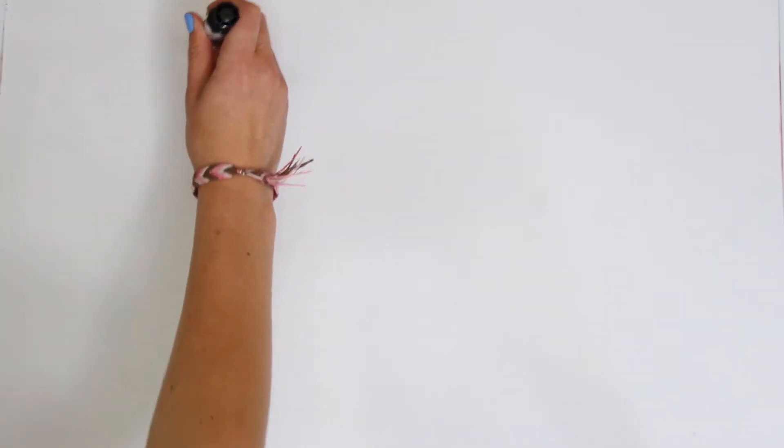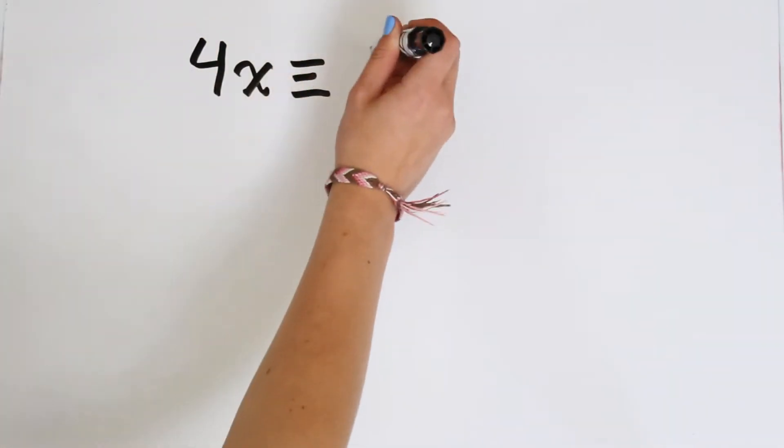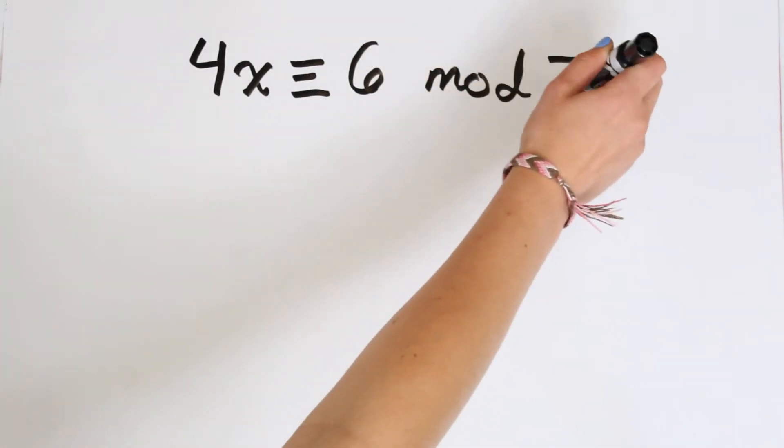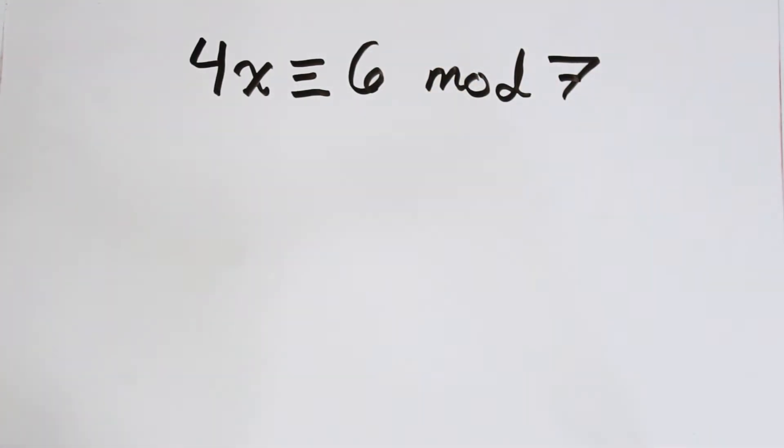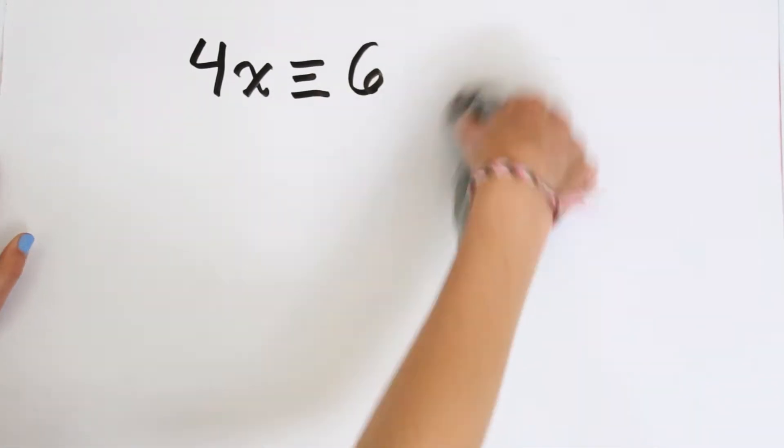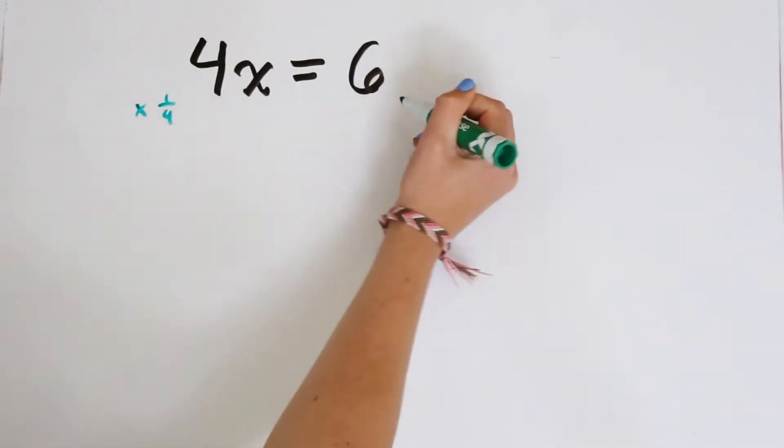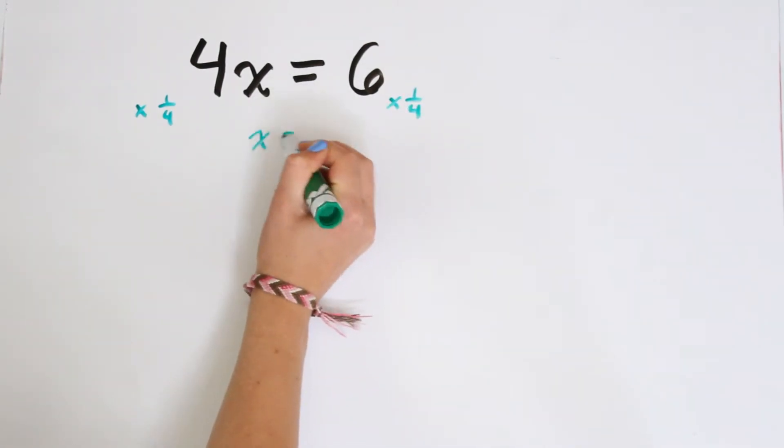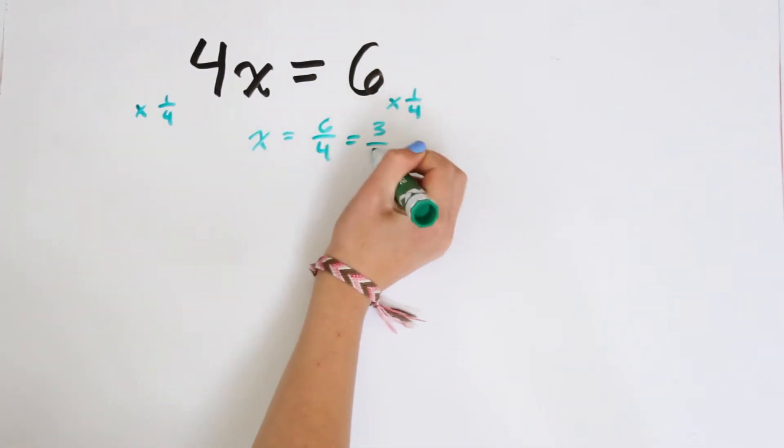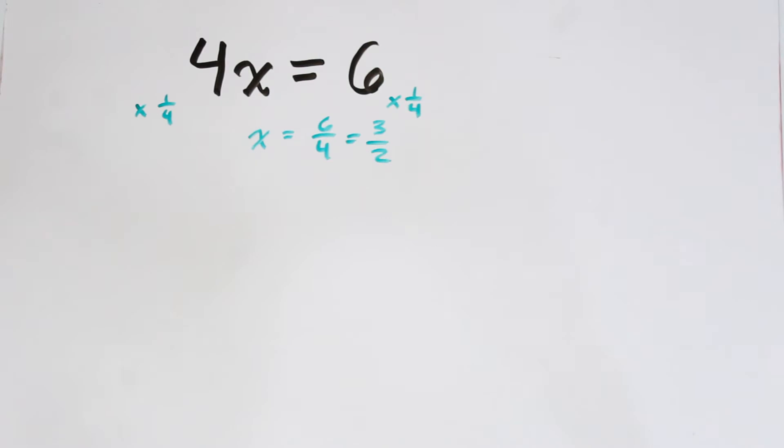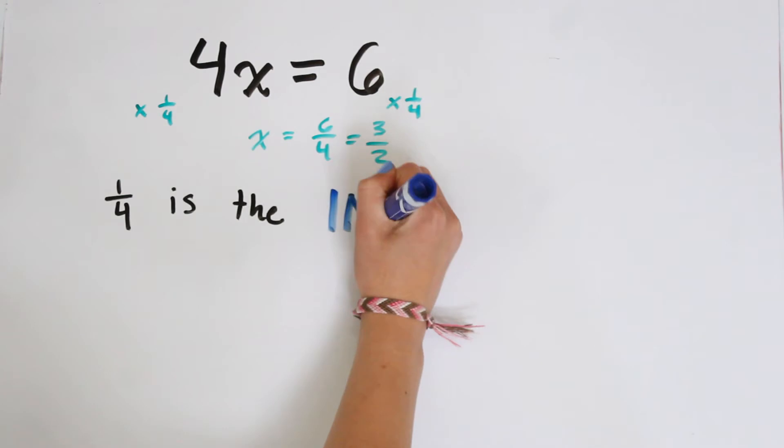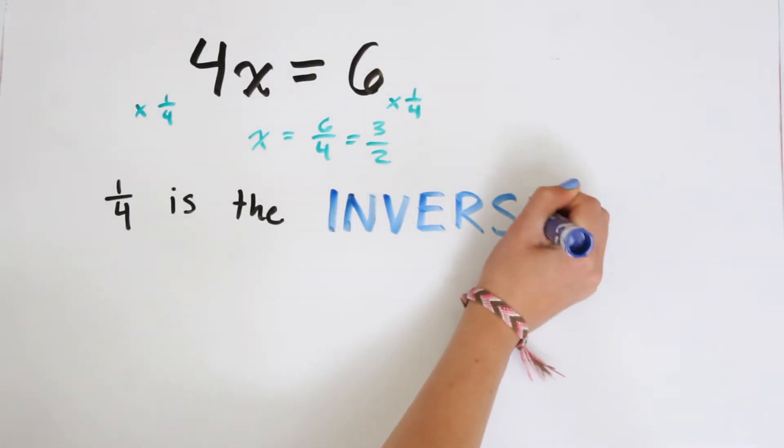Okay, so let's look at a little bit harder equation. Here we have 4x is congruent to 6 mod 7. Now we could go through and test every remainder but let's think about it more critically. So if we just had 4x equals 6 then I'm pretty sure you all would just multiply by 1 fourth and get x equals 3 halves. Well the reason we're able to do this is because 1 fourth is the inverse of 4.